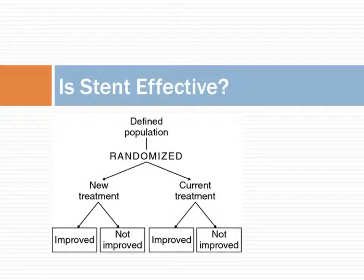Let us start with an example: is stent effective? There are two ways to answer this question. In the first approach, patients are randomized, and some receive and some do not receive stent, and then the two groups are compared. One group is called treatment and the other called control. Randomization is difficult to do — people do not want to be denied the benefits of stent just so that you can study them.